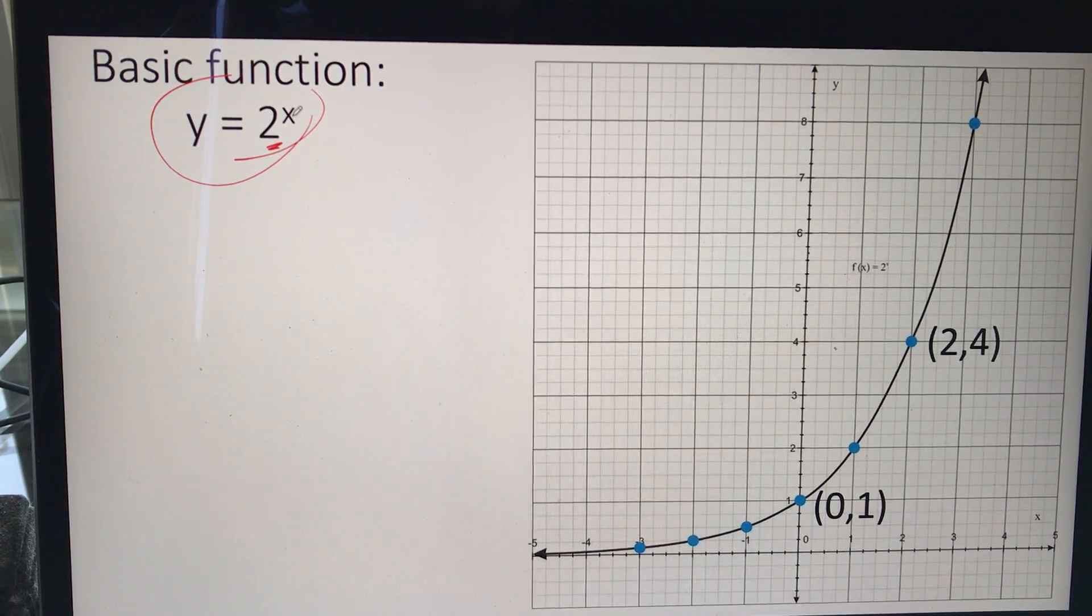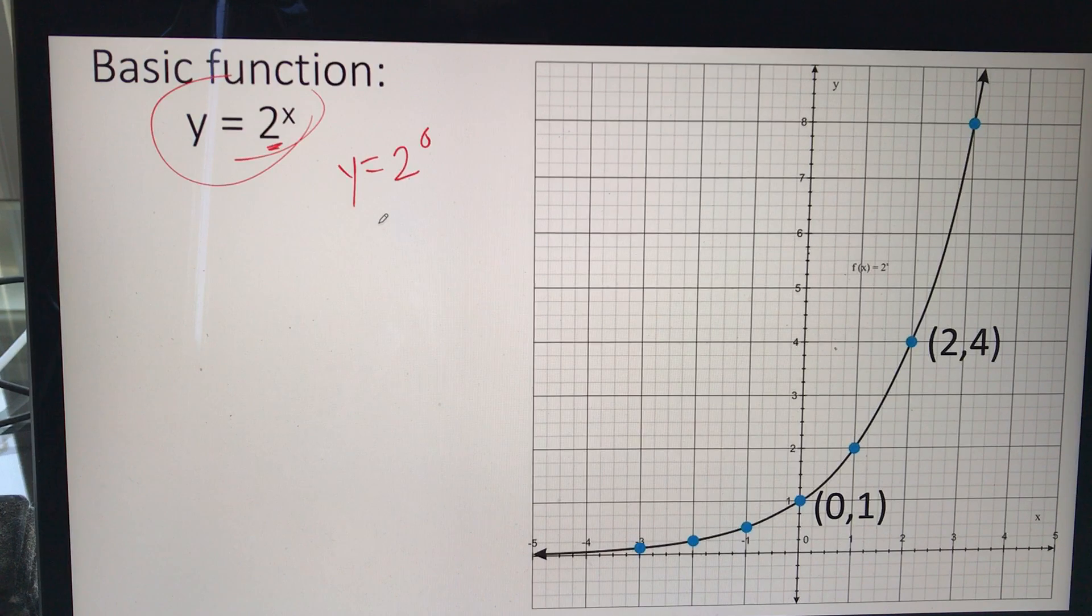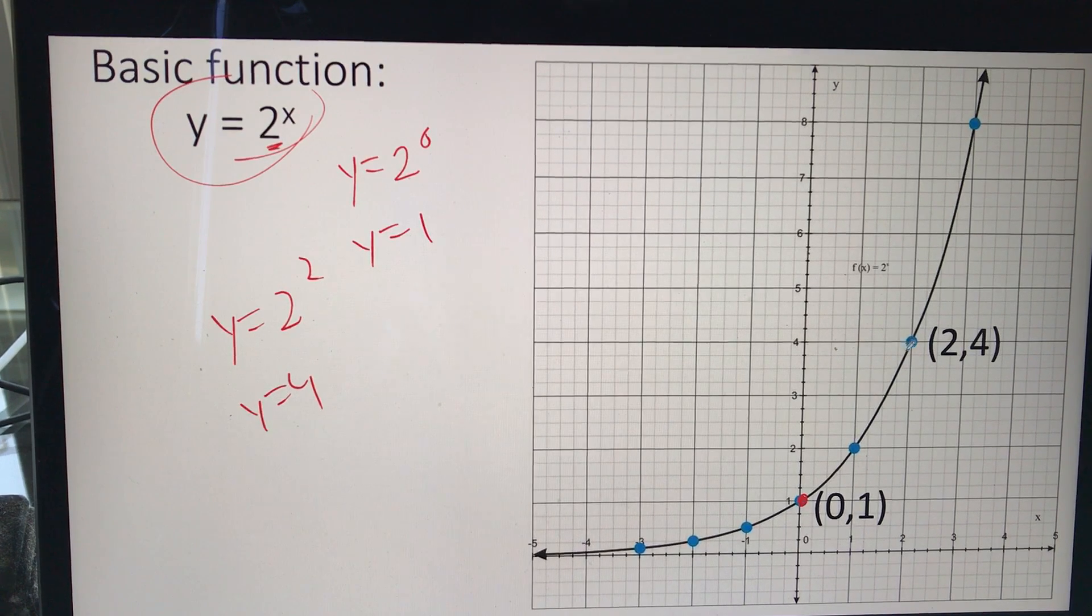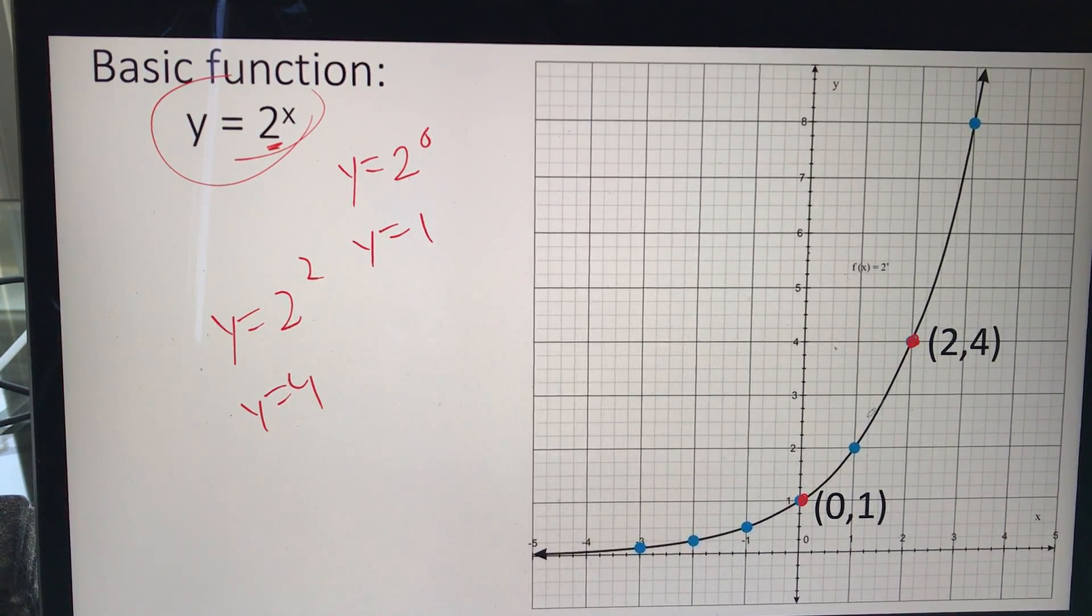We know when I put in 0 for x, y would equal 2 to the 0. Anything to the 0, of course, is 1. So here's my point (0, 1) here. I could put in 2 for x if I wanted. y equals 2 squared, y equals 4. So here's my point (2, 4). And we can keep putting in more points, but those two points are enough for us.